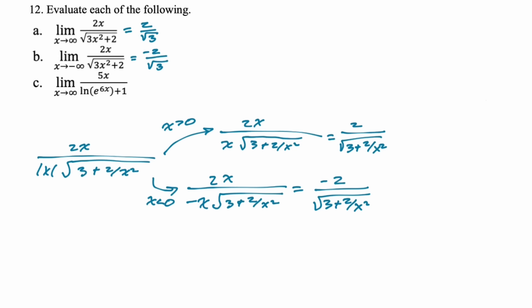For part c: ln(e^(6x)) simplifies using the property ln(a^b) = b·ln(a), and ln(e) = 1. So ln(e^(6x)) = 6x. The whole expression becomes the limit as x → ∞ of 5x/(6x + 1), which is clearly 5/6. You can use L'Hôpital's rule or just look at the leading terms.